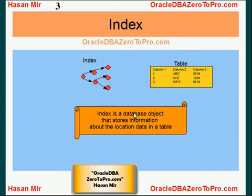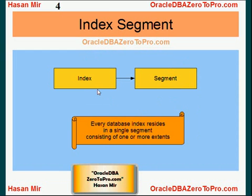I'll have separate, very detailed tutorials on the index — this is just an introduction. Index objects are optional objects. Why would you create an index? You create an index if your SELECT statements are very slow. You look at the WHERE clause of that SELECT statement, and whatever columns have been used in the WHERE clause, you try to create an index — one on each column, or you can also create composite indexes. I'll be covering that in detail later. When you create an index, that index is created in a segment.